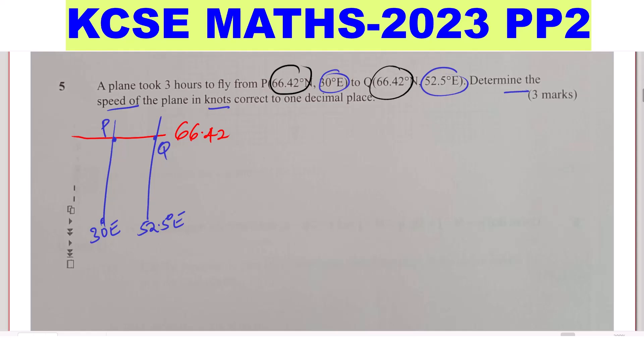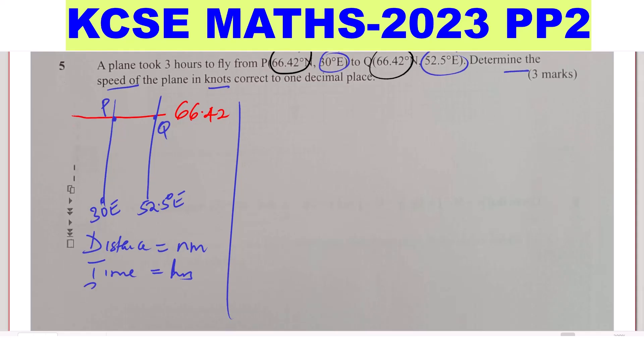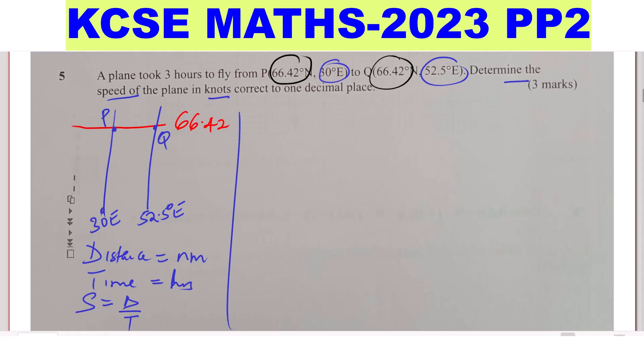To get the speed in knots, you must have the distance in knots between P and Q, and also you need to have time in hours. You know how we get the speed: speed is given by distance over time.